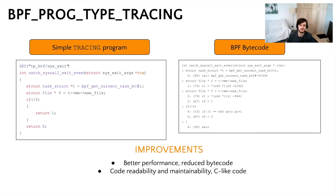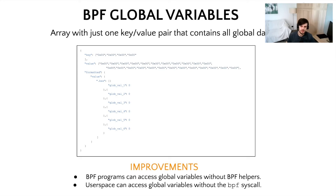Now let's see what's new in BPF maps. BPF global variables can be seen as a particular type of map — essentially an array with just one key-value pair that contains all global data. If we define 6 uninitialized BPF global variables called global1, global2, and so on, we obtain an array map with one single entry that contains all our variables. BPF programs can access the right offset in this data blob without using any BPF helper. This is very important because it brings a concrete performance boost when we have to configure our programs. Moreover, user space can also benefit from this feature, since global variables are memory-mapped and so we can access them without the BPF syscall.